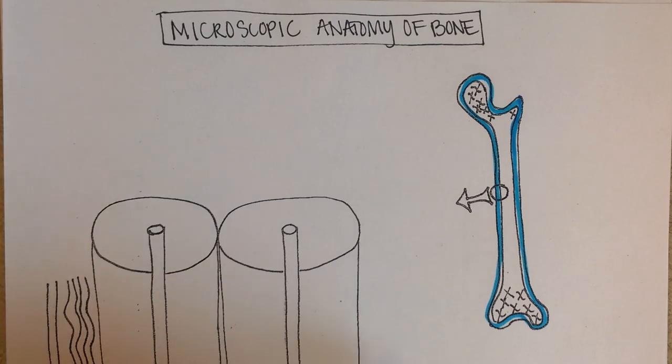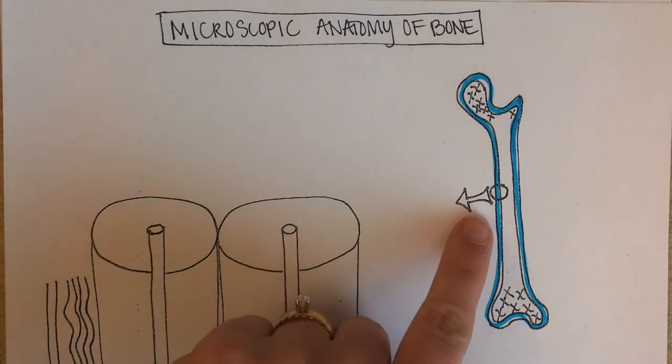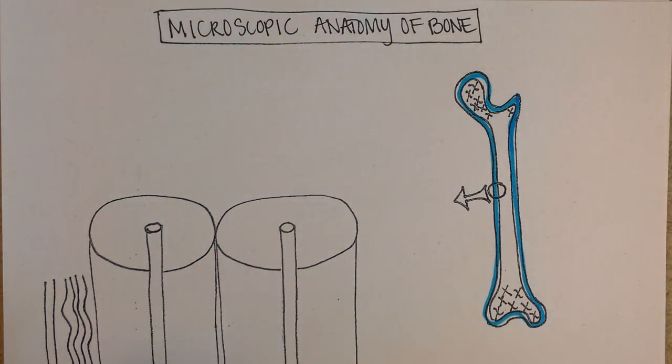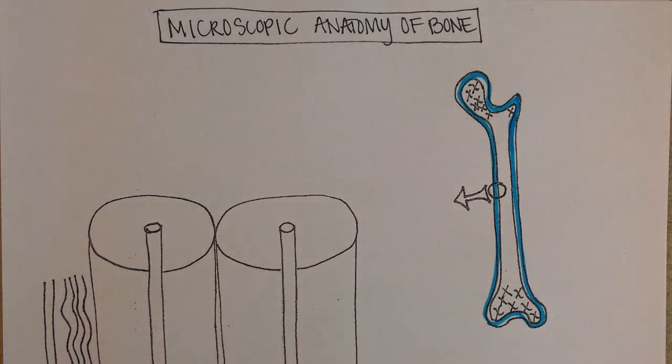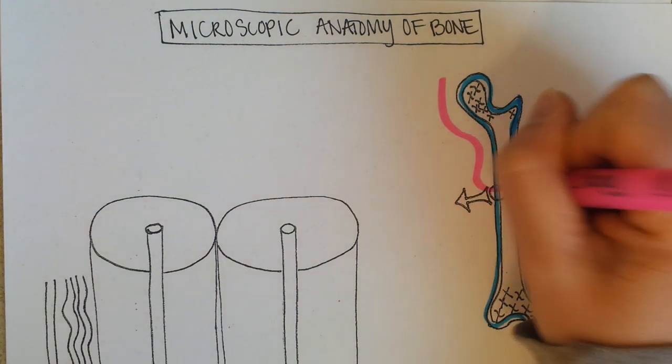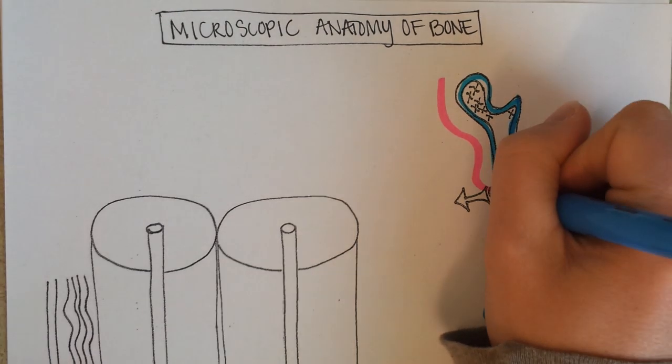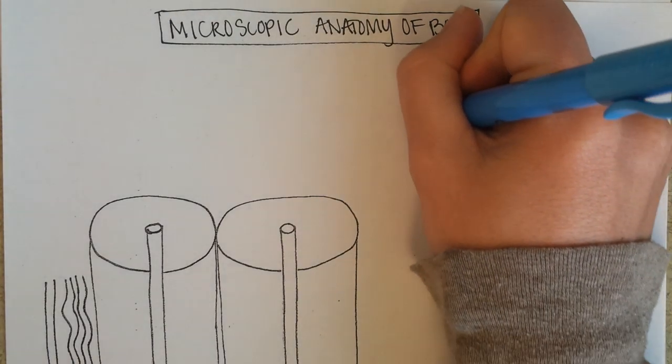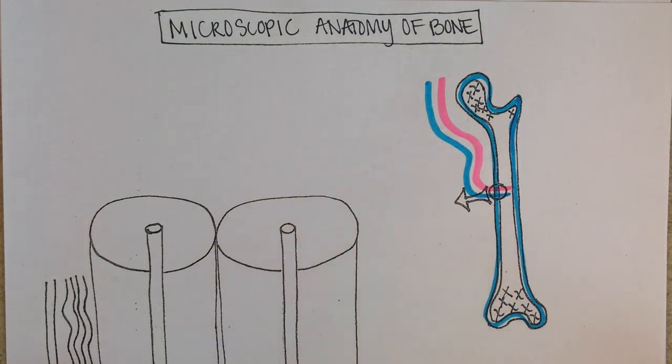Okay, so all bone has a blood supply. It is alive and that's one of the reasons why it hurts so much if you break it because it has a great blood supply and a great nerve supply. So you could imagine, let's say, an artery going in to the bone and then a vein going out of the bone. We usually use red for arteries and blue for veins.